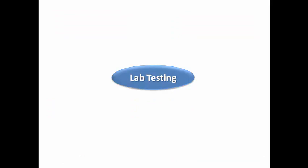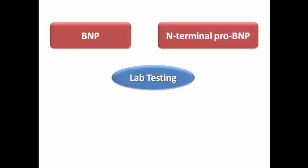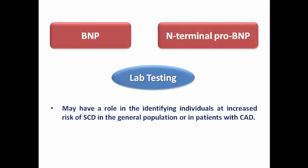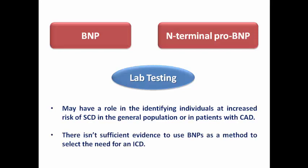We order routine lab testing including blood picture, liver function, kidney function, electrolytes, and thyroid function. Importantly, BNP and NT-proBNP may have a role in identifying persons at increased risk of sudden cardiac death or patients with coronary artery disease, but so far there is insufficient evidence to use BNP as a method to select the need for an ICD.